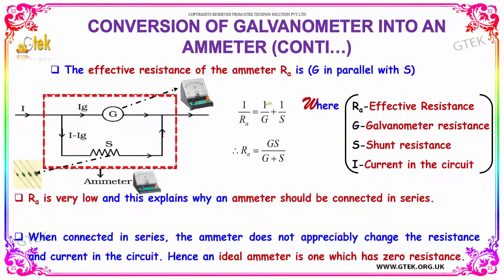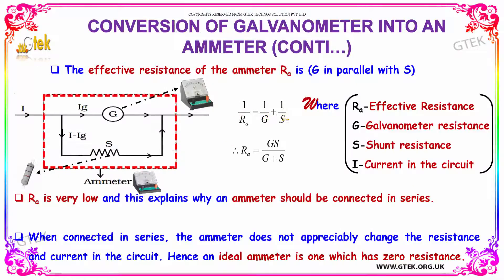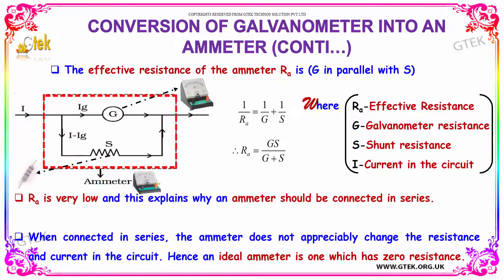The effective resistance of the ammeter R_A, where G and S are in parallel, is given by 1 over R_A equals 1 over G plus 1 over S. So, R_A is equal to G into S divided by G plus S. Here, R_A is very low, and this explains why an ammeter should be connected in series.